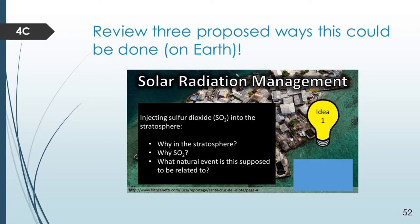In Lecture 4c, we reviewed three proposed solar radiation management approaches. One was injecting sulfur dioxide into the stratosphere — why would that work and what were we trying to do? One was changing the albedo of clouds by inducing an enhanced indirect aerosol effect — why would that work and how was it done? And one was about changing the albedo of the surface of the Earth by changing the colors of roads, parking lots, roofs, etc.